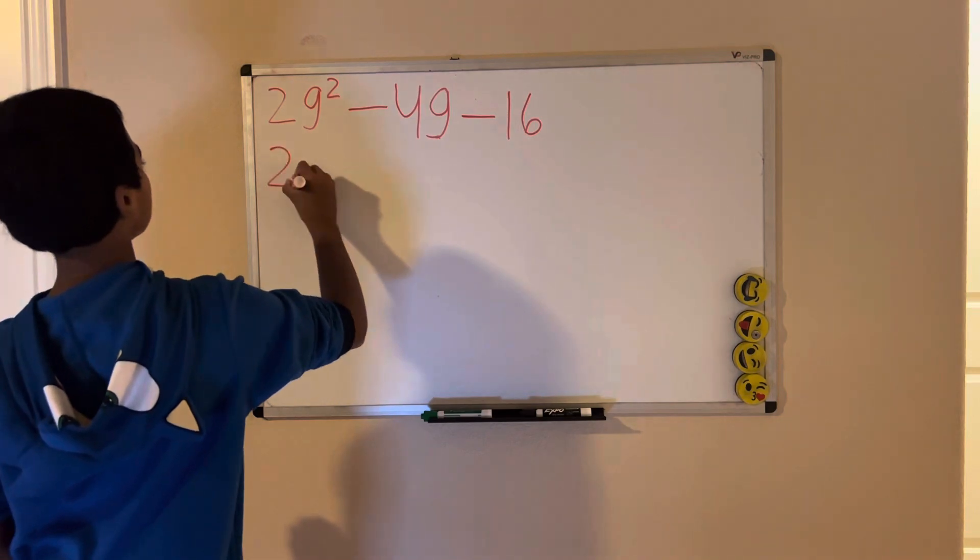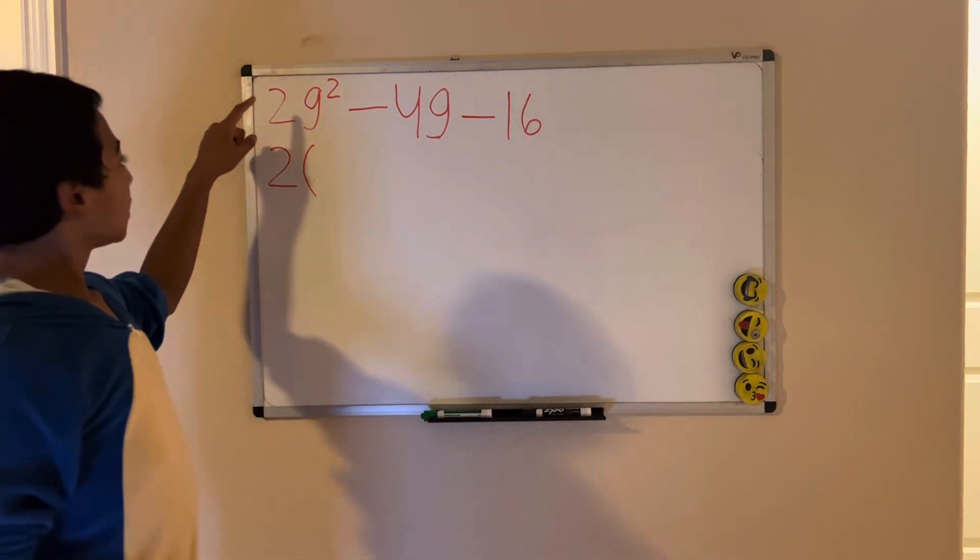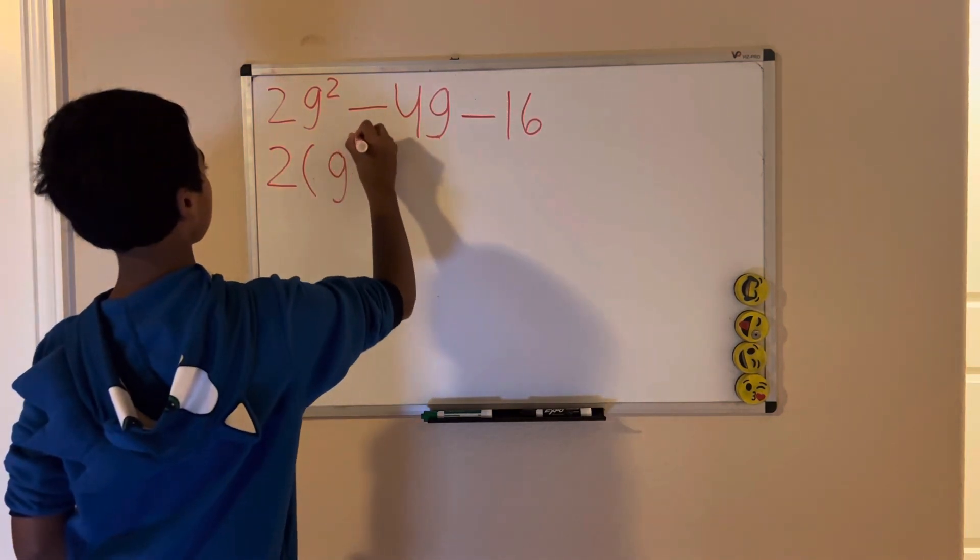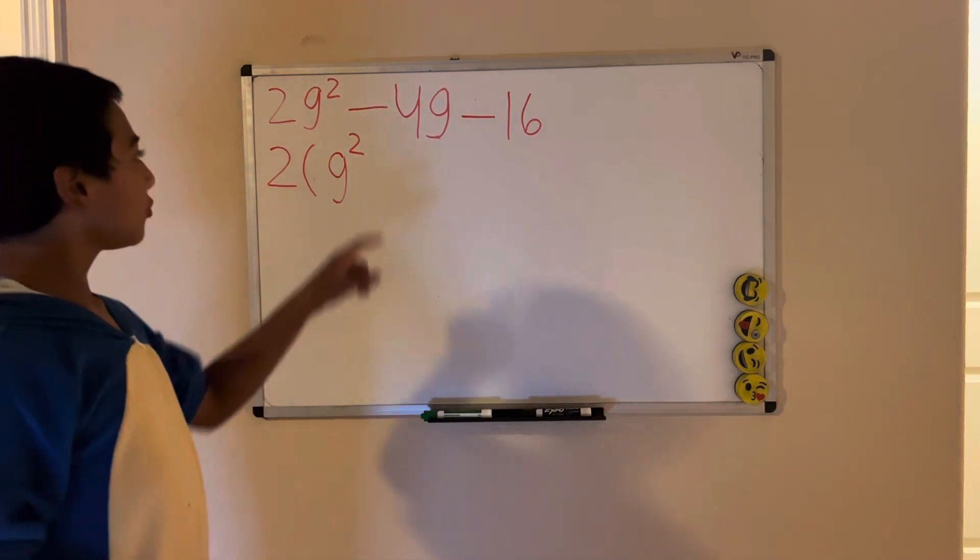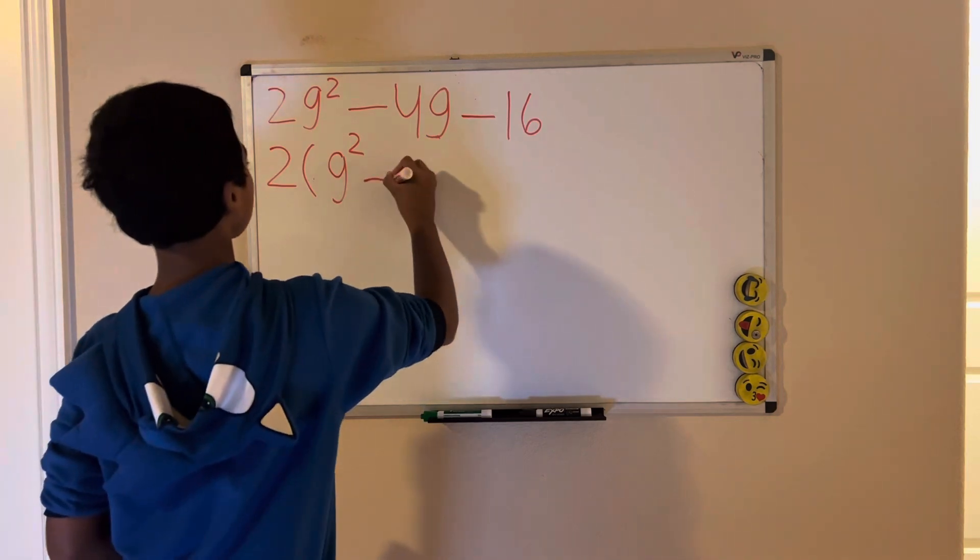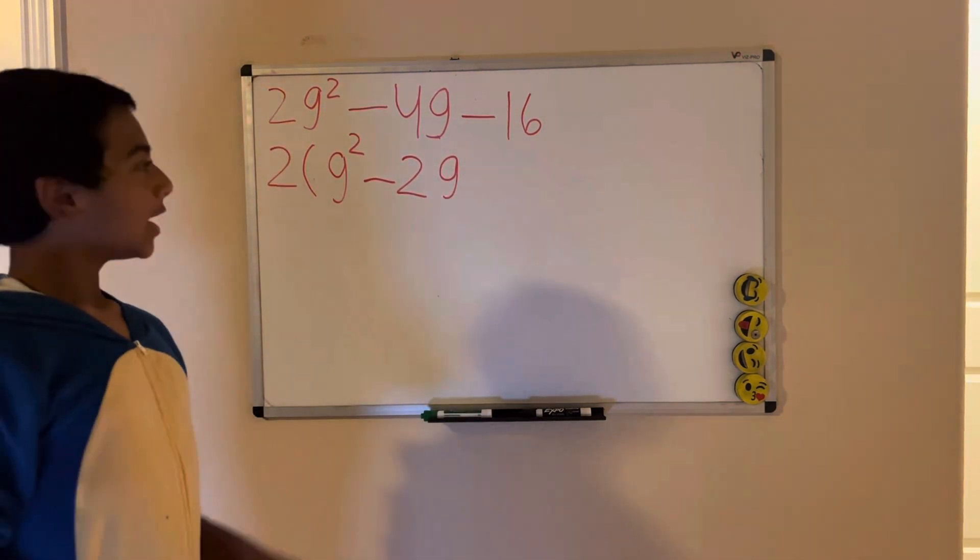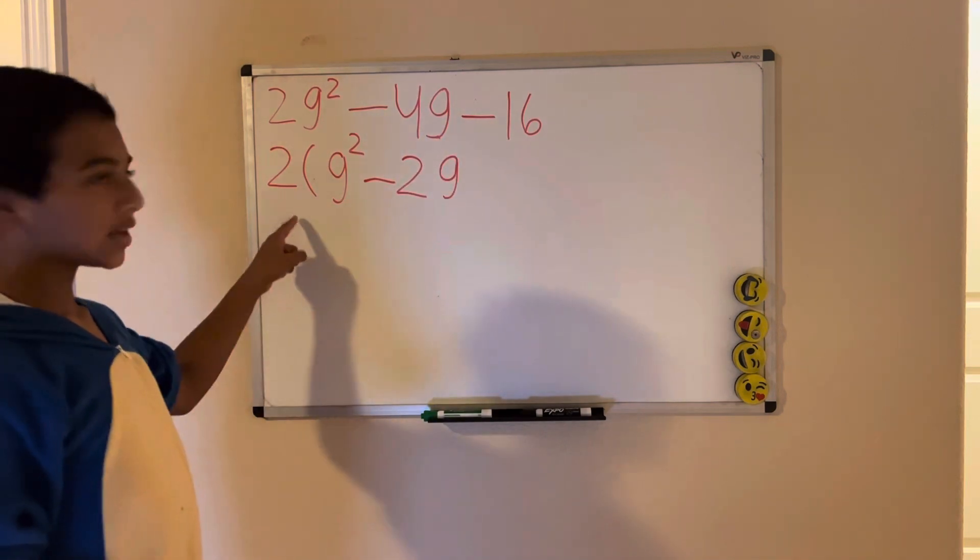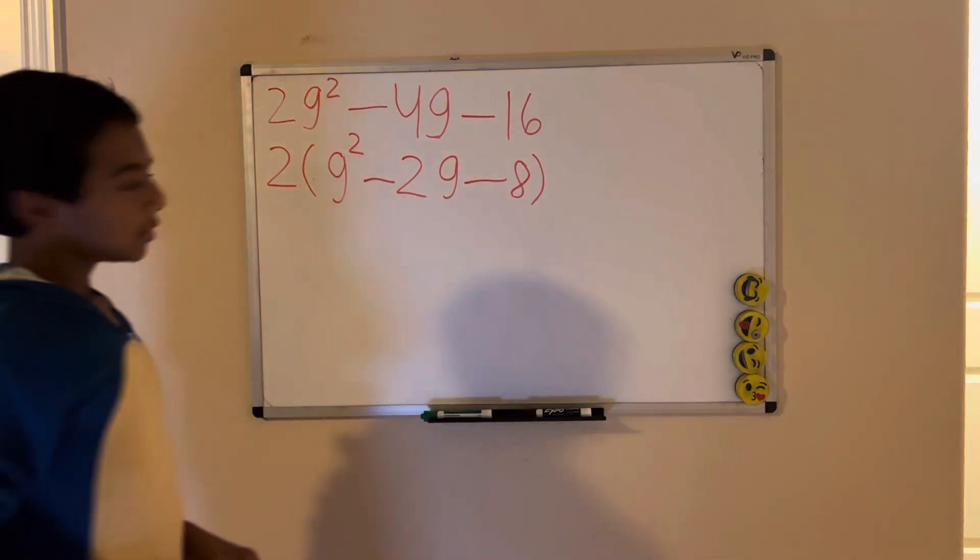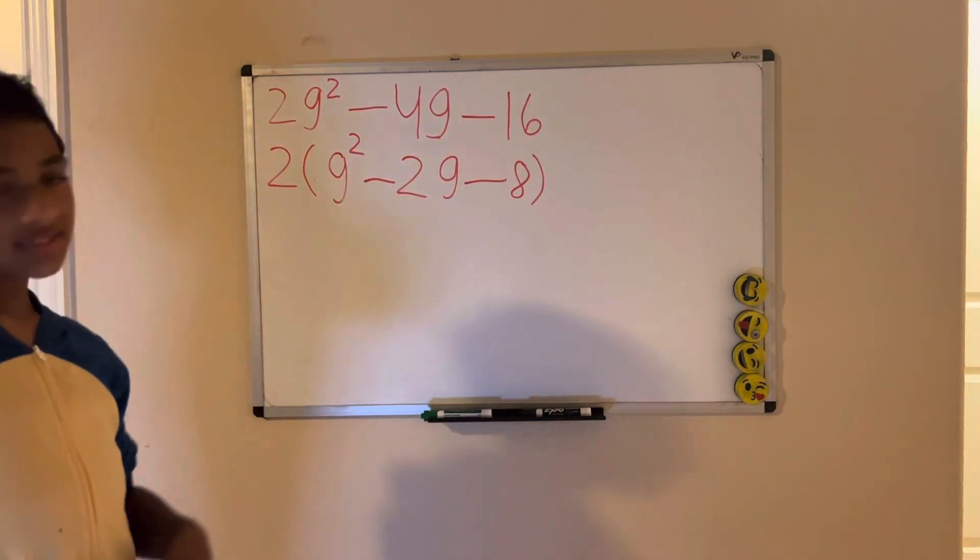So, 2 times g squared. 2g squared divided by 2 is g squared. Negative 4g divided by 2 is negative 2g, so it's minus 2g. And negative 16 divided by 2 is negative 8. Let's factor this expression inside the parentheses.